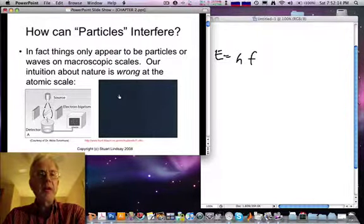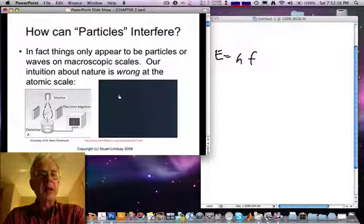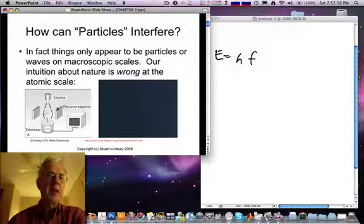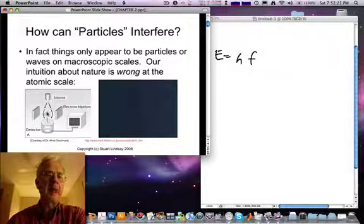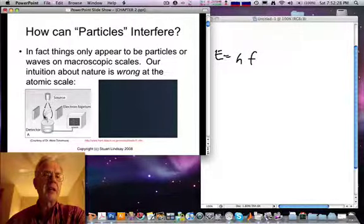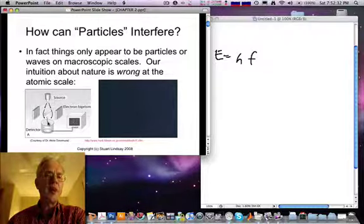So if you take electrons and make two sources of electrons, in this case by putting a wire biprism in an electron microscope, so there's a source here of highly monochromatic electrons. They can pass either to the left or the right of this biprism and then land on a screen below it.